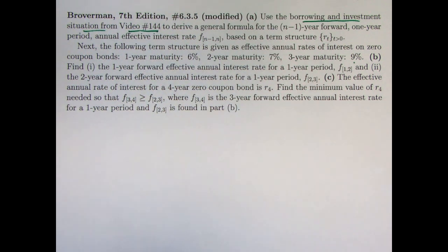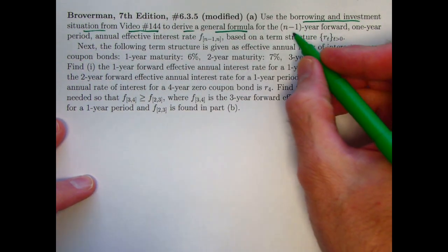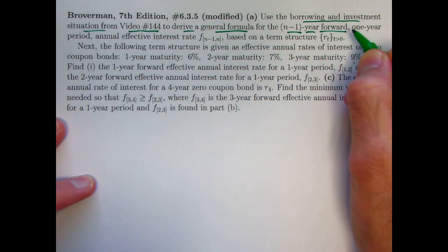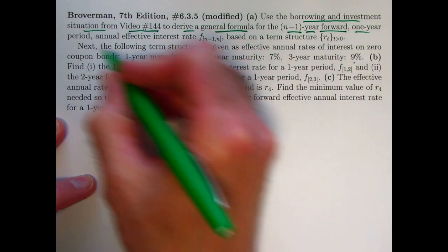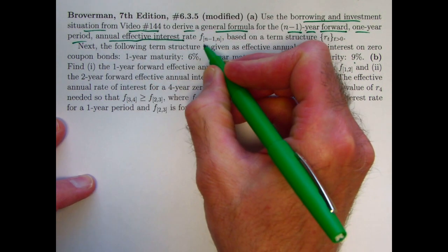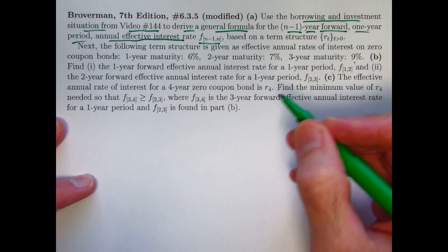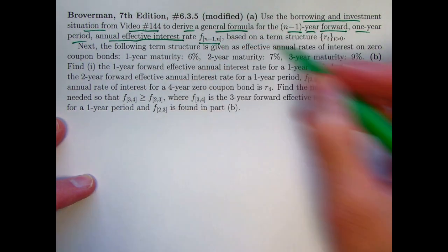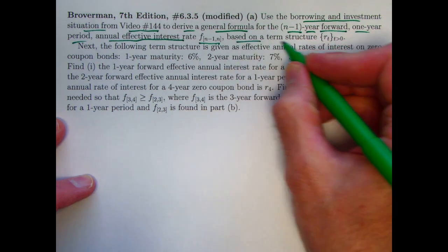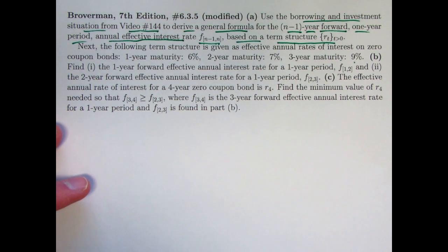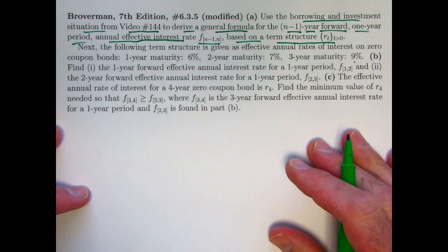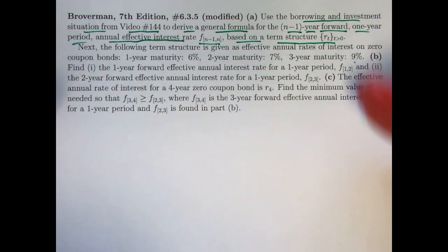I'll describe the situation again so you don't actually have to re-watch that video. To derive a general formula for what's called the n-1 year forward, in the future, one year period, annual effective interest rate, called the forward rate, denoted by the symbol F sub the interval from n-1 to n, meaning from time n-1 to time n, based on a given term structure. So that's the abstract derivation part, the modified version of this problem. Then we're going to apply that in parts B and C here, which looks like a lot to do, but it's going to go pretty quickly once we've got the formula from part A.